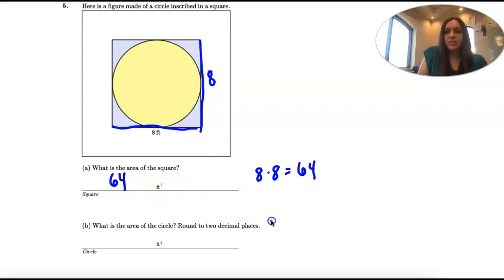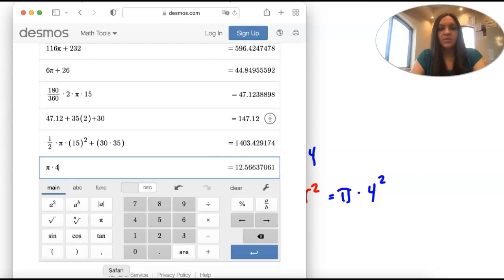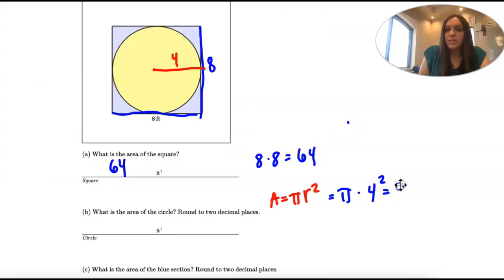Area of the circle is pi r squared. We're not given r, but we're given the diameter all the way across is 8. So halfway across would be 4. So we have pi times 4 squared, and we're rounding to two decimal places. Pi times 4 squared is 50.27 when we round, and that's square feet as well.